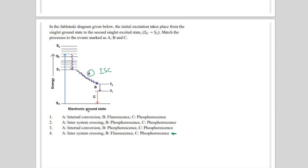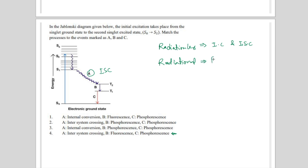In the Jablonski diagram, there are two types of transitions: radiationless transitions and radiational transitions. In radiationless transitions you have internal conversion and inter-system crossing — in inter-system crossing the spin changes, while in internal conversion there is no change in spin. In radiational transitions you have fluorescence and phosphorescence.